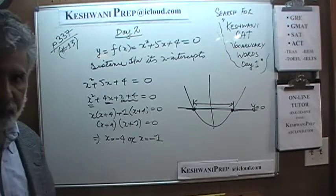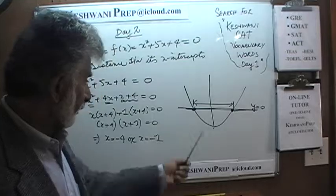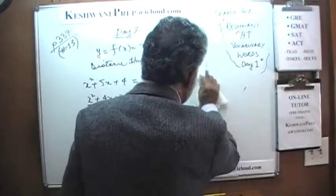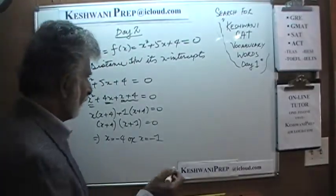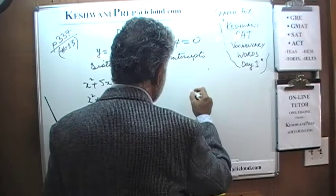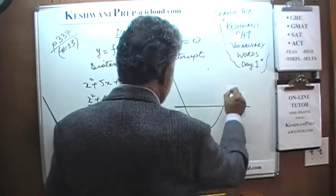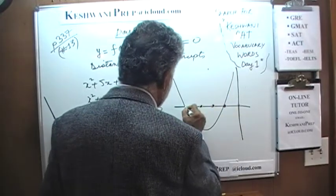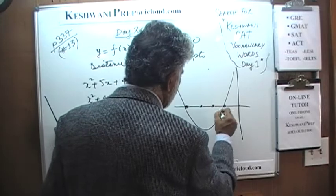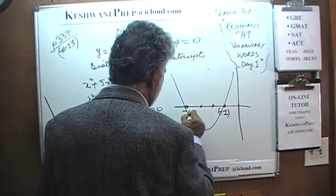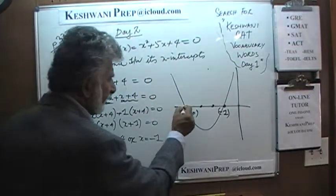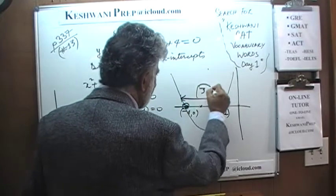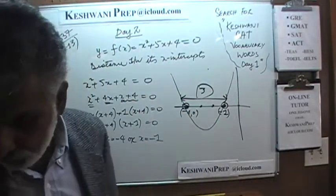Those are the two x-intercepts. It turns out the parabola I drew isn't quite right because both intercepts are negative. But we don't have to redraw it. As you can see, the distance is 3. If you want to visualize it: on the number line, negative 1 and negative 4 are the two intercepts, and the distance between them is 3 — and that's all they are looking for here.